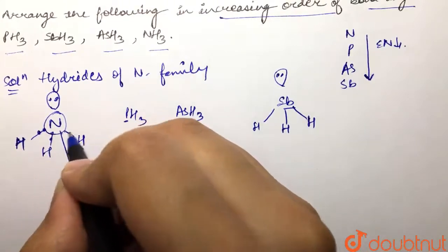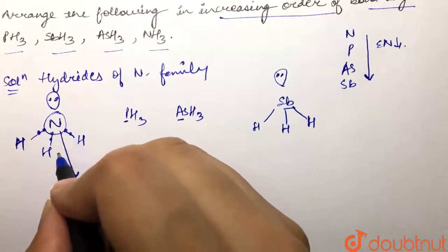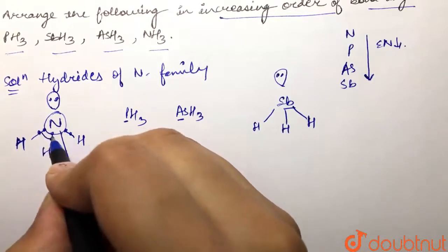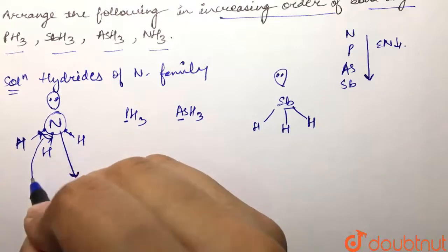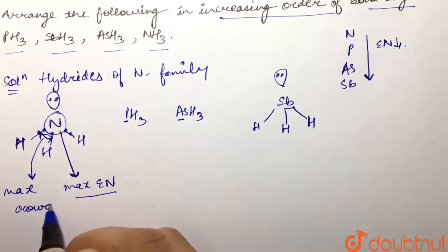Now, due to its electronegativity, it would have a tendency to attract the shared pair of electrons towards itself. The consequence would be that there would be repulsion, or we can say there would be maximum crowding near nitrogen.